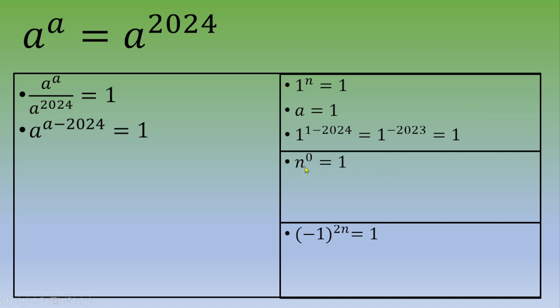Second case: a number different from zero^0 = 1. If we apply this to this exercise, then a = 2024, and we've got 2024^(2024-2024) = 2024^0, and this is 1.